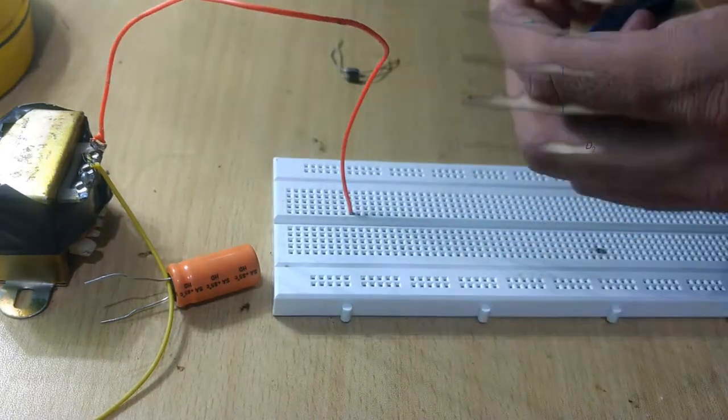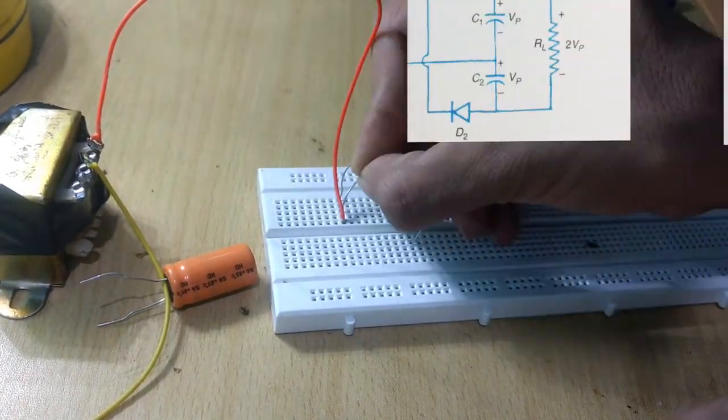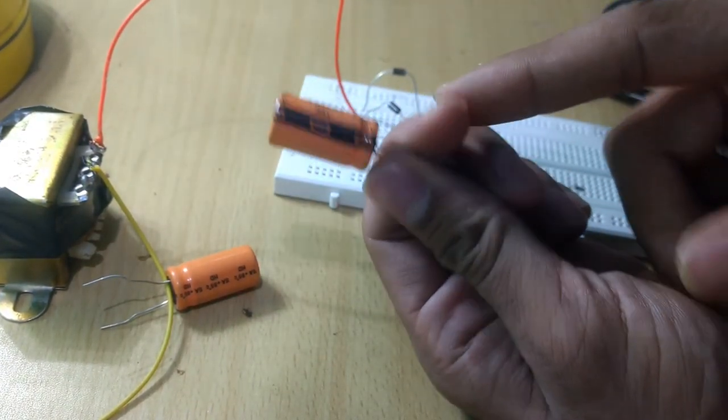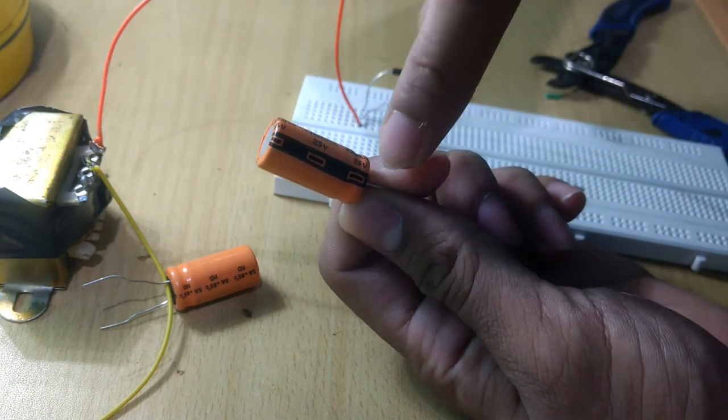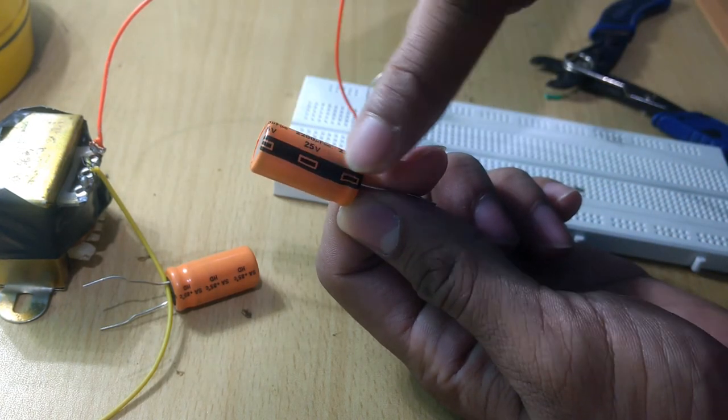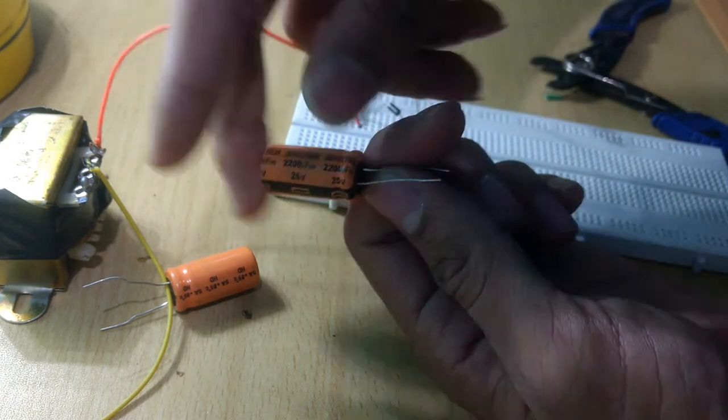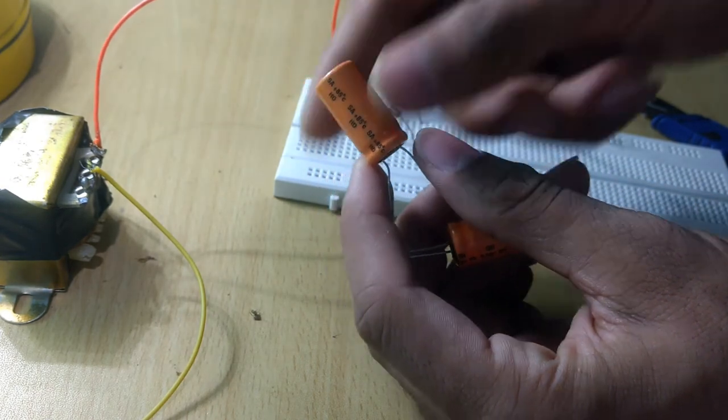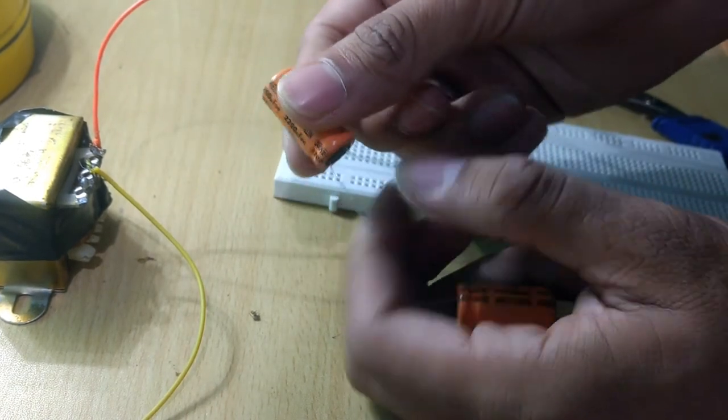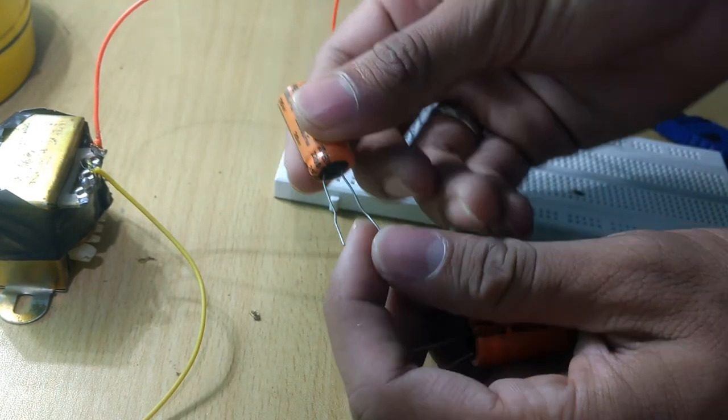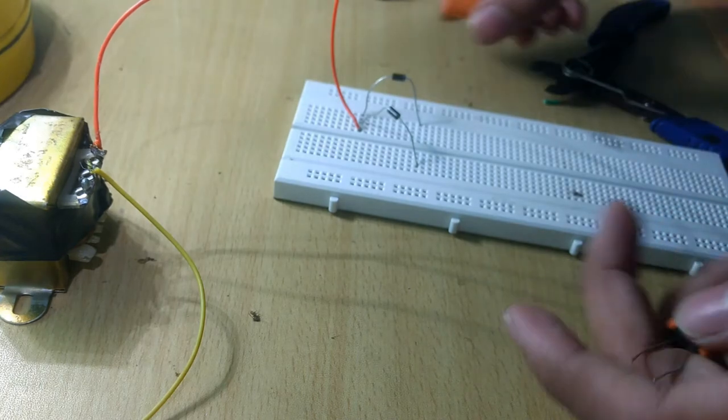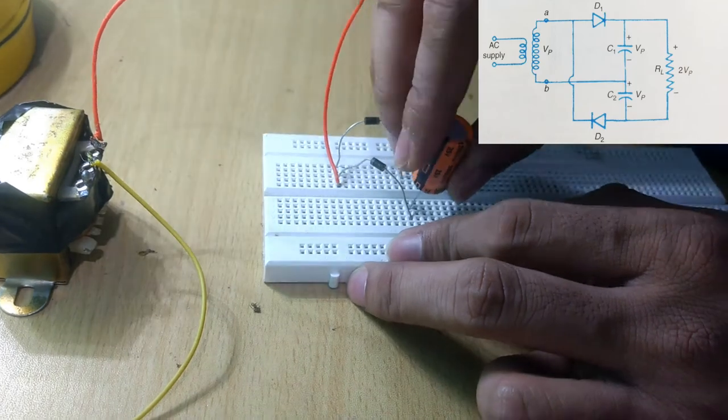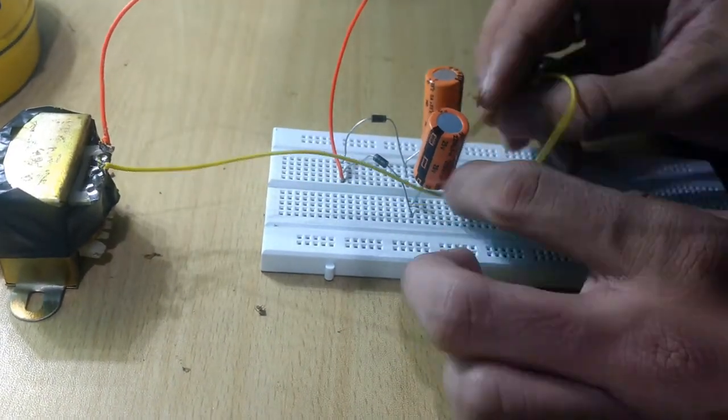Now, in this type of electrolytic capacitor, one thing to keep in mind is that this black line indicates the negative. If we take a fresh capacitor, we can see that the positive leg is a bit longer, same as in the case of LEDs.